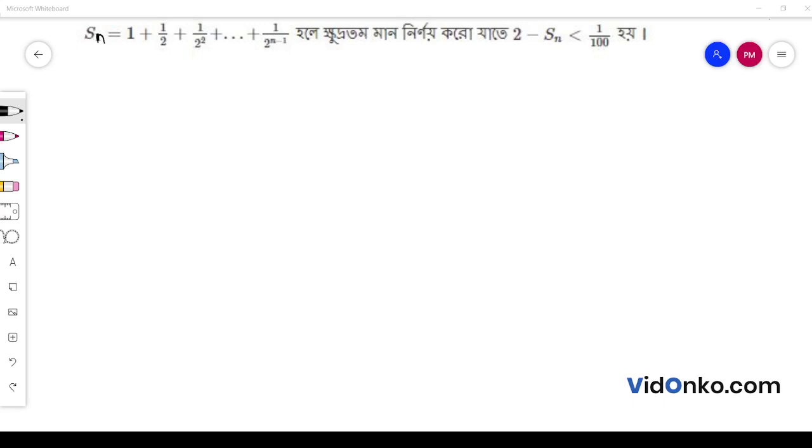Sn is equal to 1 plus half plus 1 by 2 square dot dot 1 by 2 to the power n minus 1. So, n is equal to 2 minus 2 Sn is less than 1 by 100.